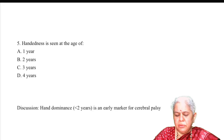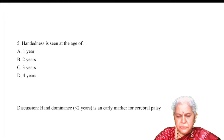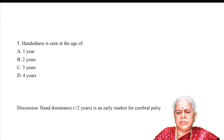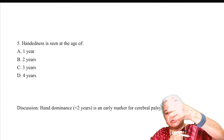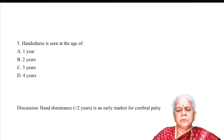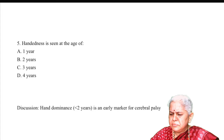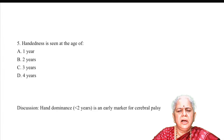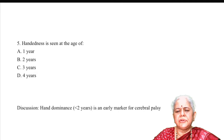Question on handedness: at what age is hand dominance typically seen? The answer is C — three years. At four to six months, the child is bidextrous; it then becomes unidextrous. If you see hand dominance in a child less than two years old — for example, a six-month-old reaching only with the left hand and not moving the right — it may indicate weakness on one side, suggesting hemiparesis or cerebral palsy.